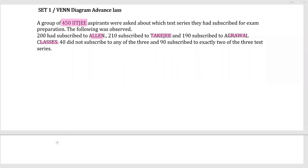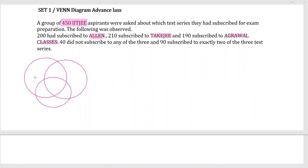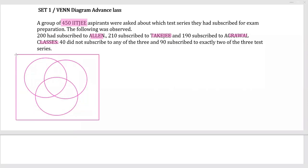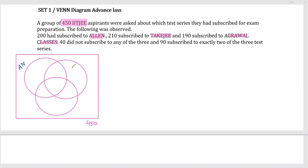Let me go on drawing that in diagram format. These are the three sets and let me consider this is the total. The first piece of information is 450 which is the total. Let me consider LN as A_N, TakeG as T_J, and Agarwal Classes as A_C — these are the three.